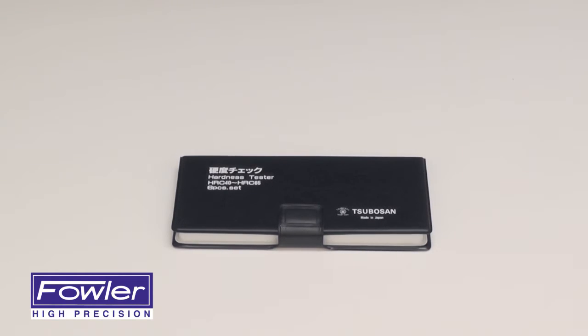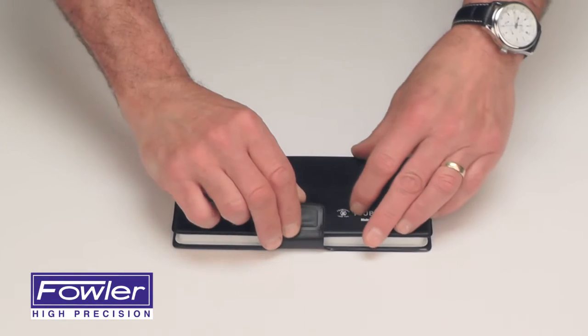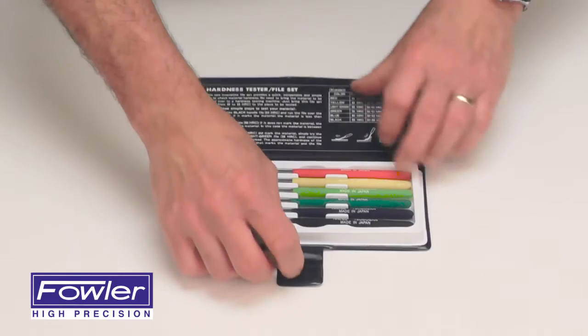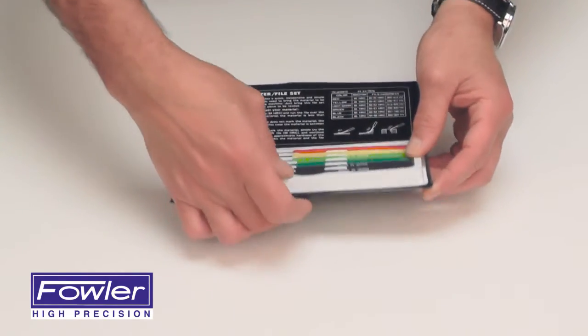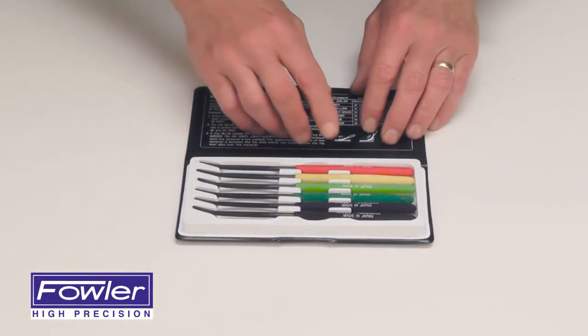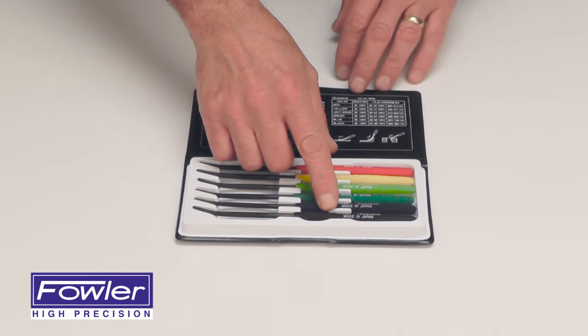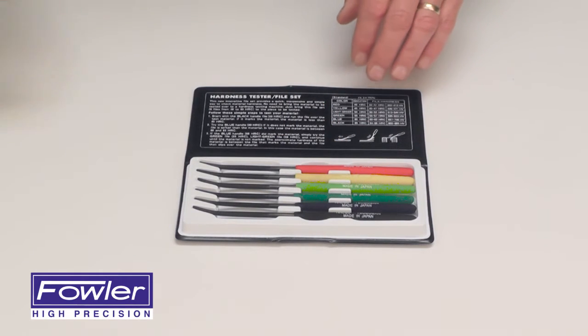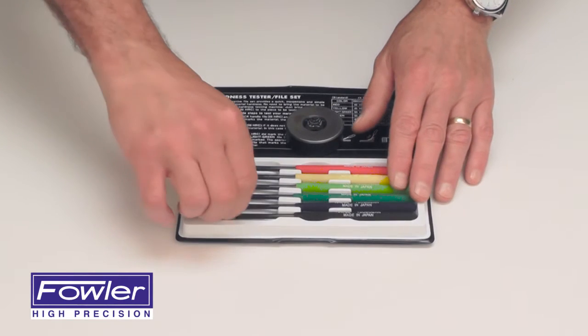The Fowler Hardness Tester File Kit supplied in a fitted case includes six various files ranging from 40 to 65 Rockwell C. It's an economical, quick, easy way to check hardness.